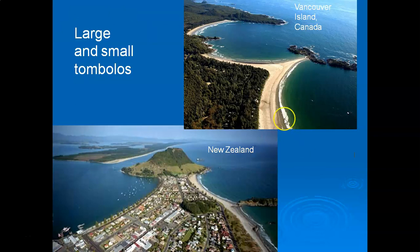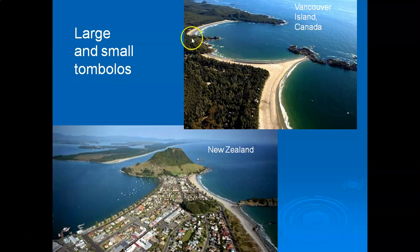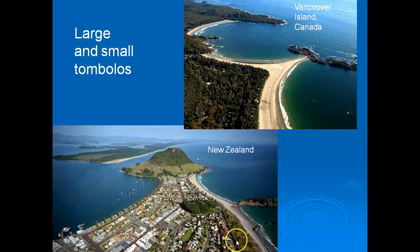Tombolos can also be very small — here on Vancouver Island there's a small tombolo in a pocket beach with headlands. And here's a beautiful example of suburbia in New Zealand on a quite large tombolo. That ends the lecture.